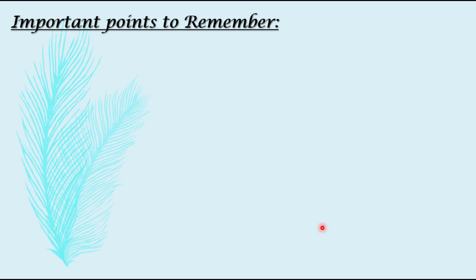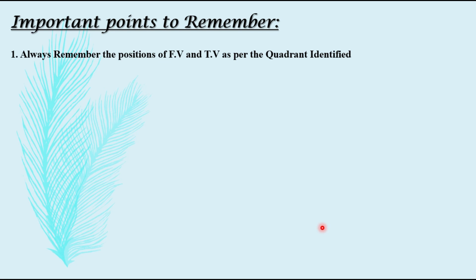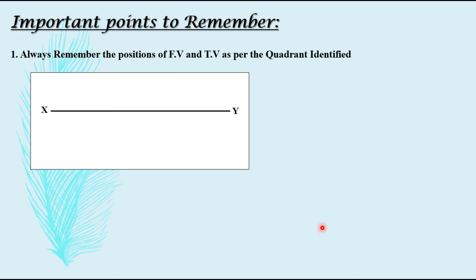Now, some important points to remember. Always remember the positions of front view and top view as per the identified quadrant. For the first quadrant: front view is above XY, top view is below XY. For the second quadrant: both front view and top view are drawn above XY. For the third quadrant: front view is below XY, top view is above XY. For the fourth quadrant: both front view and top view are below XY. You only need to remember the first two, because the third is the opposite of the first and the fourth is the opposite of the second.